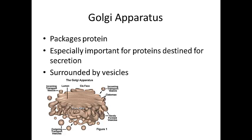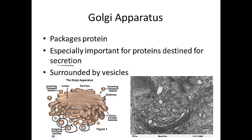Next we have the Golgi apparatus, which is responsible for packaging proteins. This is especially important for proteins that are going to leave the cell and be secreted. Those proteins get surrounded by a vesicle, and you'll find lots of vesicles around the Golgi apparatus. By the way, it's sometimes called Golgi apparatus, sometimes Golgi body, sometimes Golgi complex — it's all the same thing. Here's a micrograph of the Golgi apparatus.